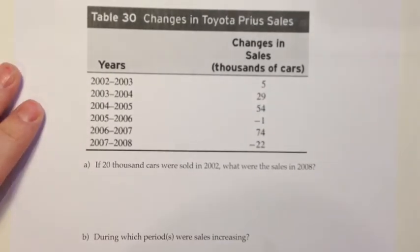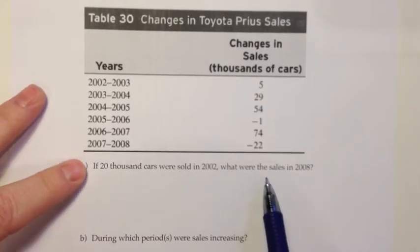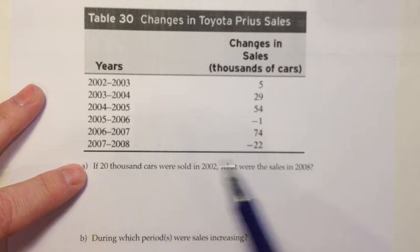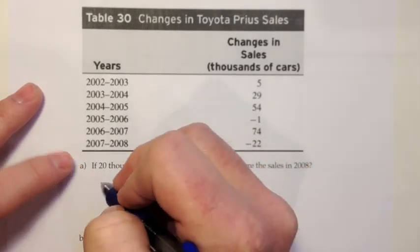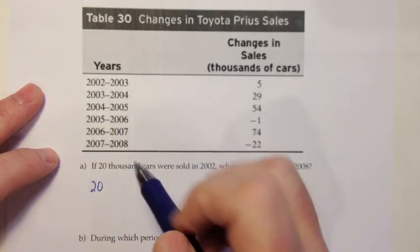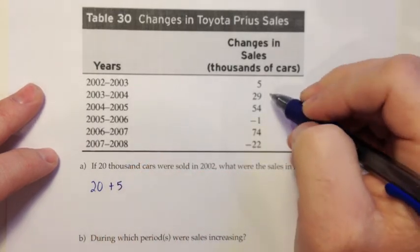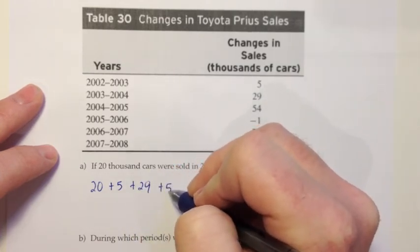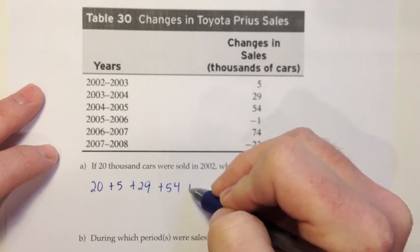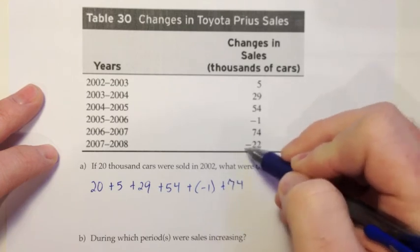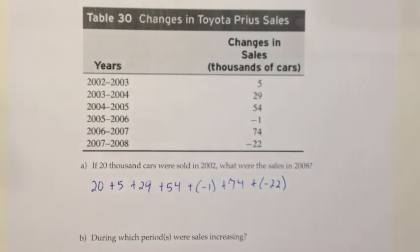So if 20,000 cars were sold in 2002, what were the sales in 2008? So to do that, we have to track all these changes from 2002 to 2008. So I'd start off with my beginning amount, 20,000 cars. And I'm just going to write 20. We'll deal with 1,000 a little later. And then what happened in that next year? Sales went up, so plus 5. And how about the next year? Sales went up again, plus 29. The next year, sales go up again, and then the next year, a dip, so plus minus 1. And then a growth, and then another decline, so plus negative 22. So that would be translating all these changes into addition and subtraction problems. If the sales went up, it's a plus. If the sales went down, it's a minus.